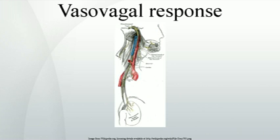On the other end of the spectrum is the vasodepressor response, caused by a drop in blood pressure to as low as 80/20 without much change in heart rate. This occurs due to vasodilation, probably as a result of withdrawal of sympathetic nervous system tone. The majority of people with vasovagal syncope have a mixed response somewhere between these two ends of the spectrum.